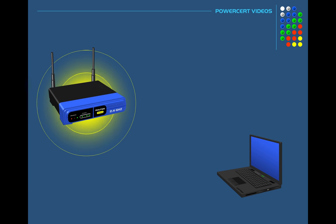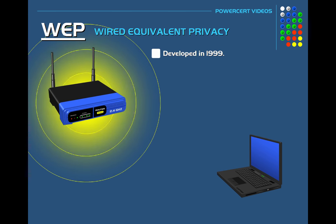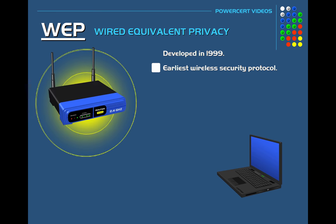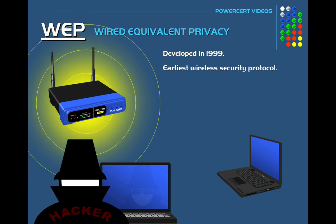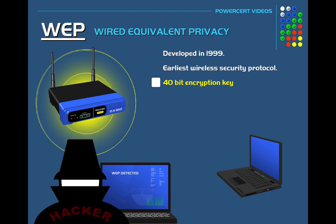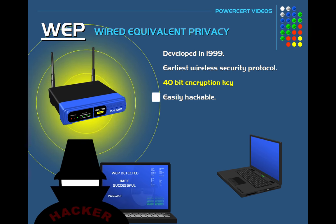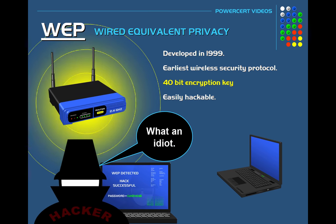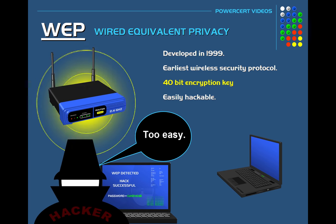There are several different protocols used for securing a Wi-Fi network. Let's start with WEP. WEP, or Wired Equivalent Privacy, was developed in 1999 and it's the earliest security protocol used for wireless networks. As its name implies, it was meant to supply the same security to wireless networks as wired networks. However, the 40-bit encryption key that WEP used was vulnerable and easily hackable. That's why today WEP is no longer used and modern Wi-Fi routers won't even have it as an option.